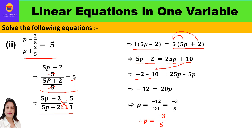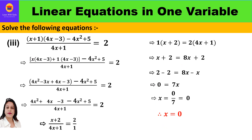Plus 10 goes to the left as minus 10, and 5p goes to the other side as minus 5p, giving 25p minus 5p. So minus 2 minus 10 is minus 12, and 25p minus 5p is 20p. Therefore p equals minus 12/20, which simplifies by dividing by 4 to give p = minus 3/5.